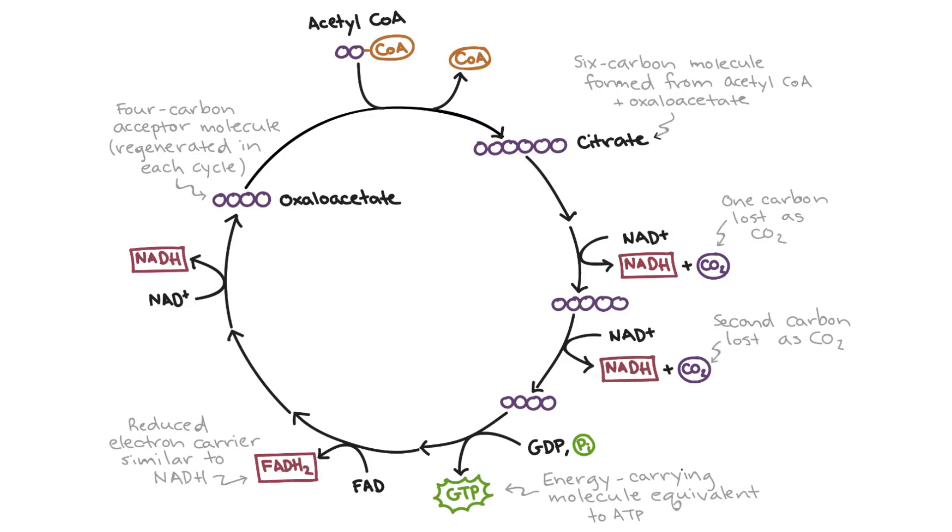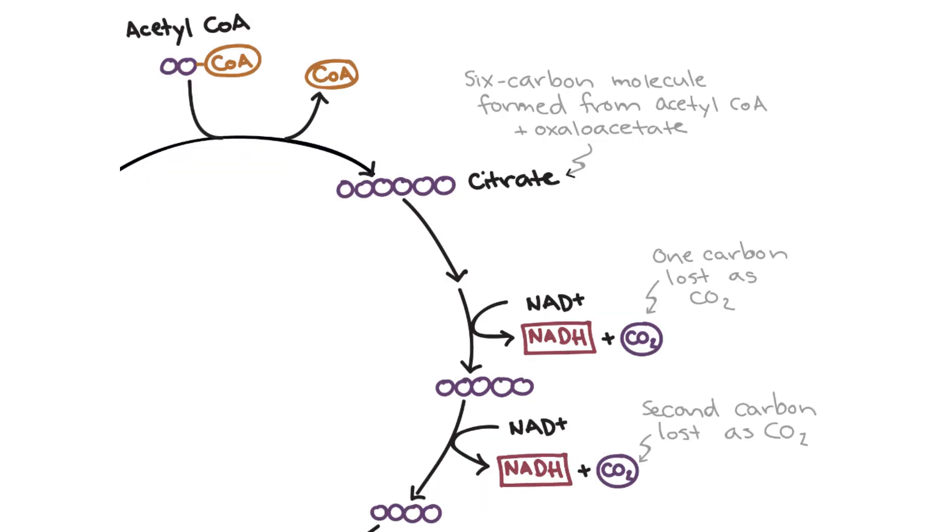But now that we have finished pyruvate oxidation, and we have our acetyl-CoA molecules, we can begin the Krebs cycle. We start off with the acetyl-CoA molecule, which like mentioned before, has two carbons. This molecule combines with a four-carbon molecule called oxaloacetate, forming a six-carbon molecule called citrate.